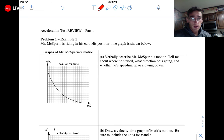So first it says, verbally describe Mr. McSparin's motion. It says tell me more, tell me about where he started. So I'm going to underline that. That's something I know I need, what direction he's going, and then also it wants me to tell about speeding up or slowing down. All right, so that's one, two, three different things I'm going to have to write about.